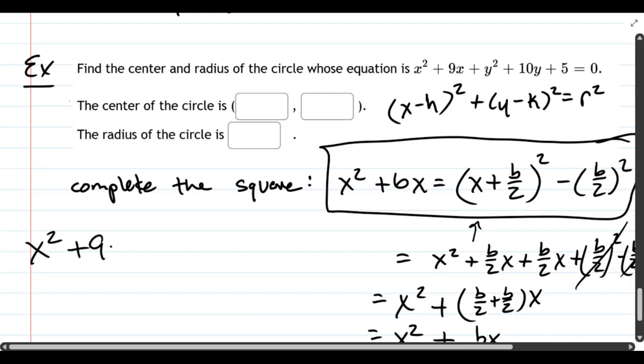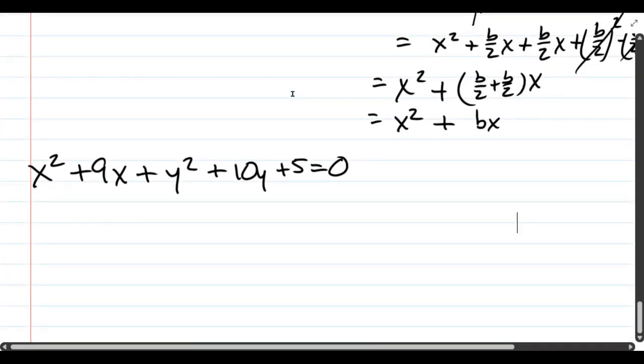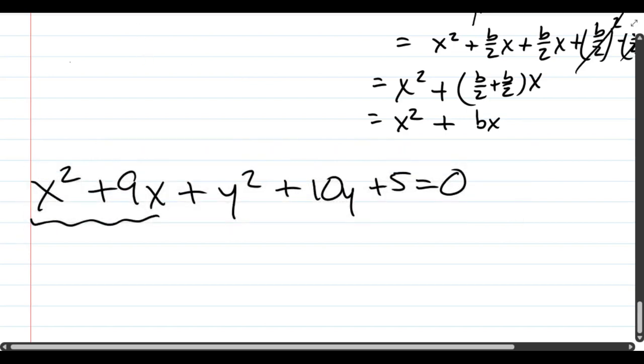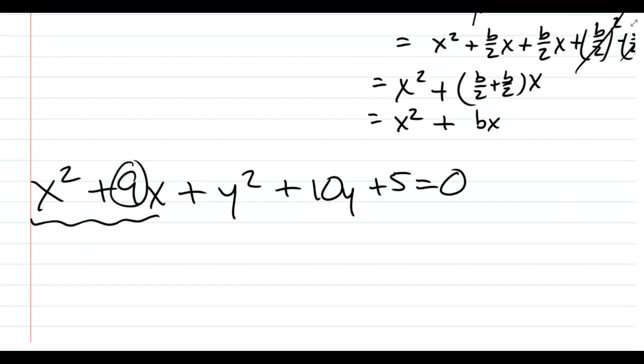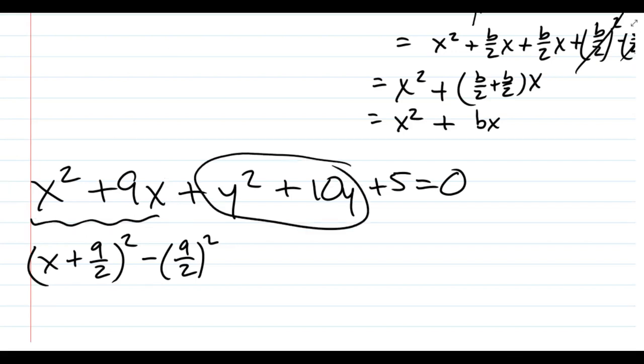So let's go ahead and use this. I have x squared plus 9x plus y squared plus 10y plus 5 equals 0. I'm going to complete the square, I'm going to do it on the x's first. So b for us is 9, and b over 2 is 9 over 2. So that's x plus b over 2 squared minus b over 2 squared. So that takes care of just what I have underlined, just that part.